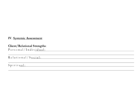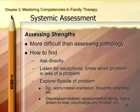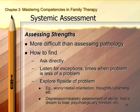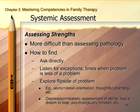Now we get into the systemic assessment itself, beginning by assessing client and relational strengths. There are sections to highlight personal and individual strengths, relational and social strengths, and spiritual strengths. Most people think assessing strengths is going to be easier than assessing pathology and problems, but it is generally a lot more difficult and requires more crafty thinking on the part of the therapist. Most clients come in ready to talk about problems, and by the time they finally get to a therapist, they feel so overwhelmed that the problem is all they can think about.